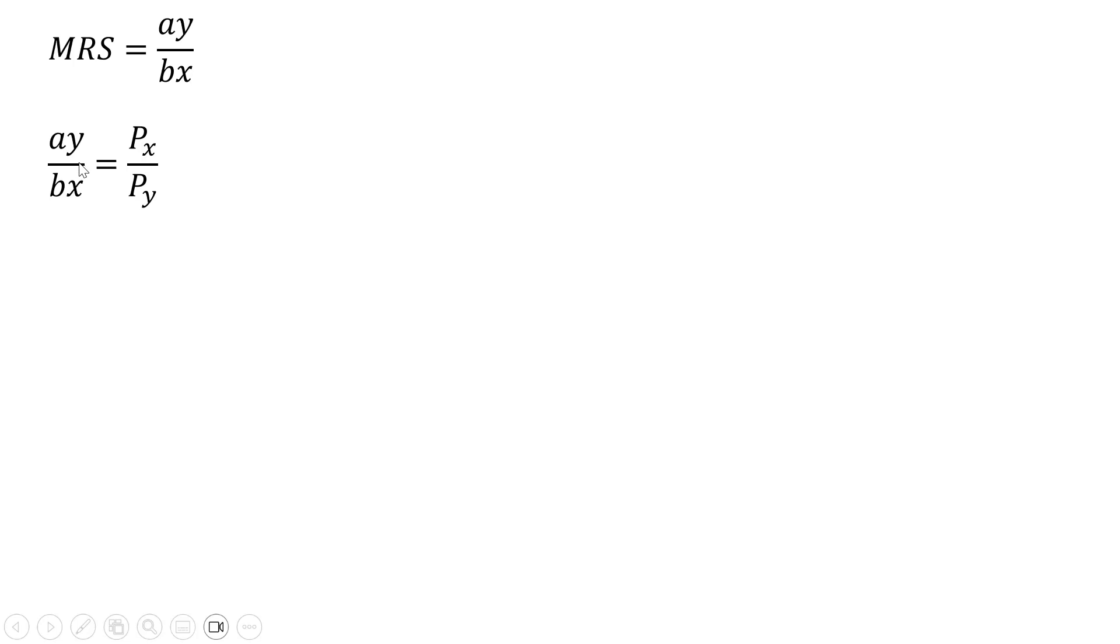To get the utility maximizing consumption bundle, the marginal rate of substitution must equal the price ratio Px/Py. We'll simplify and solve for y by multiplying through by x, then by b times Py, moving these terms from the left side to the right side, giving us y = bPx*x/(aPy).